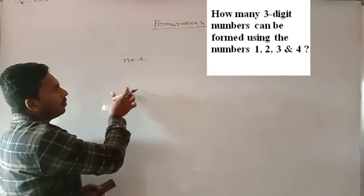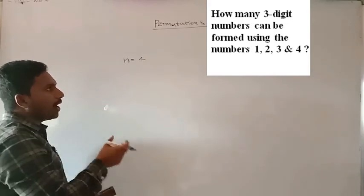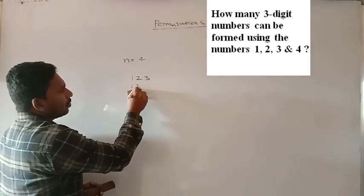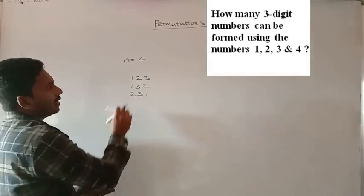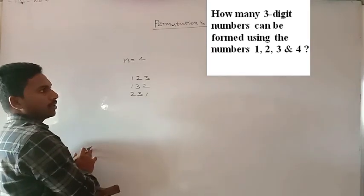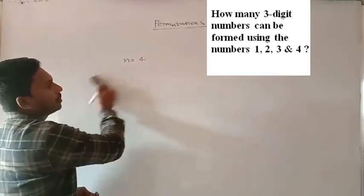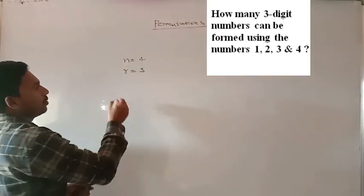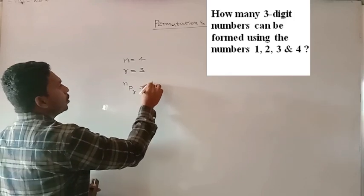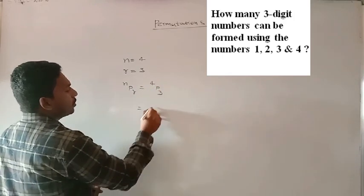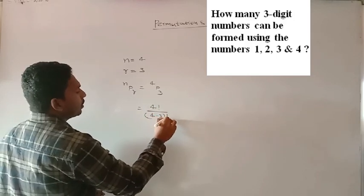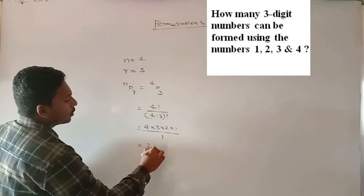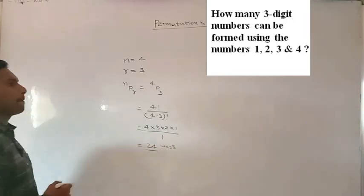To form a three-digit number, you need three numbers. Out of 1, 2, 3, 4, if you choose 1, 2, 3 you can write them as 1-2-3, 2-3-1, etc. — changing the order gives a new number, so we use permutation. R is 3, formula is NPR = 4P3 = 4! / (4−3)! = 4×3×2×1 / 1 = 24 ways.